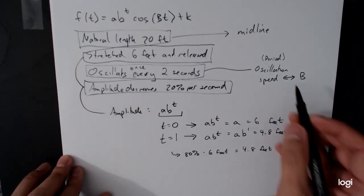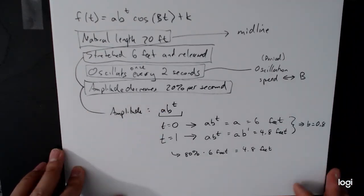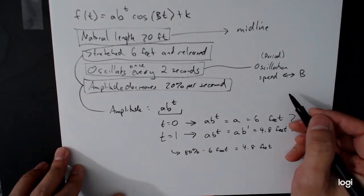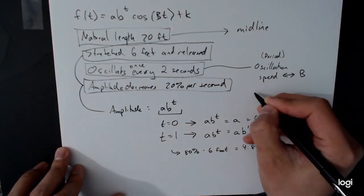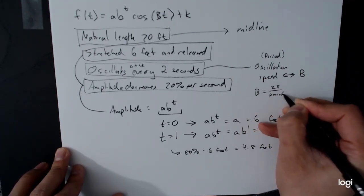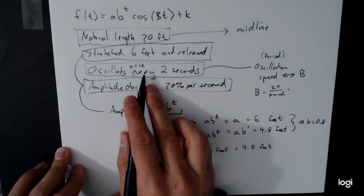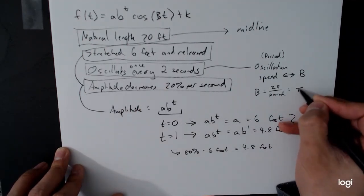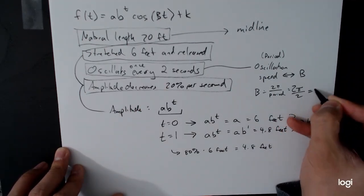Oscillates once every two seconds. That gives us our value of capital B. And so the value of capital B is going to be, well, remember that b is equal to 2 pi over the period. We know that the period is two seconds. And so b is going to be equal to, well, two pi over two, which is pi.